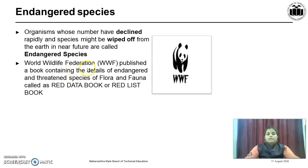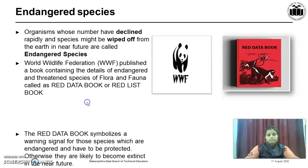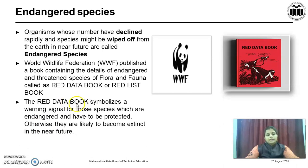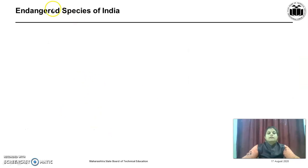The World Wildlife Federation, also called WWF, publishes a book containing the details of endangered and threatened species of flora and fauna — flora means plants and fauna means animals — called the Red Data Book or Red List Book. The Red Data Book symbolizes a warning signal for those species which are endangered and have to be protected; otherwise, they are likely to become extinct in the near future.